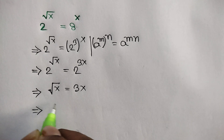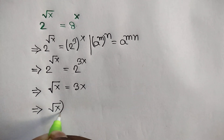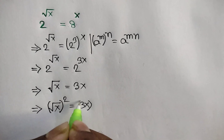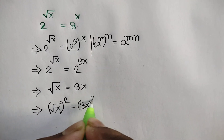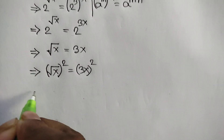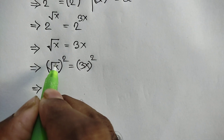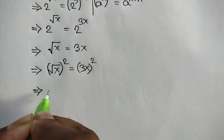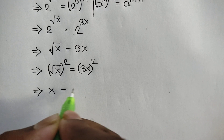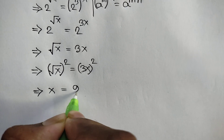Now, squaring both sides, we can write: square root of x, whole square, is equal to 3x whole square. The square root cancels, so it will be remaining x is equal to 3 squared, that means 3 times 3, so 3 times 3 is equal to 9. Therefore x is equal to 9x squared.